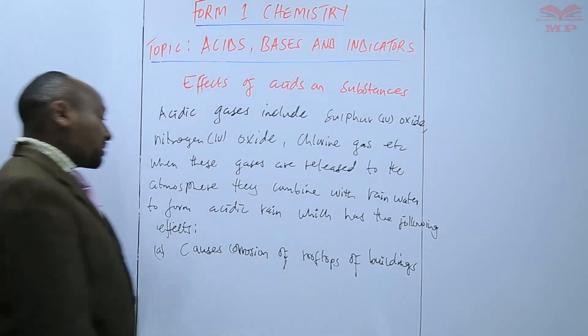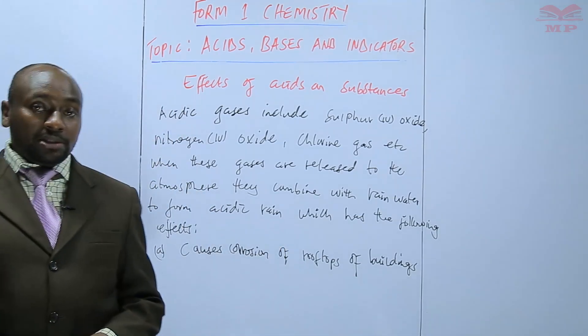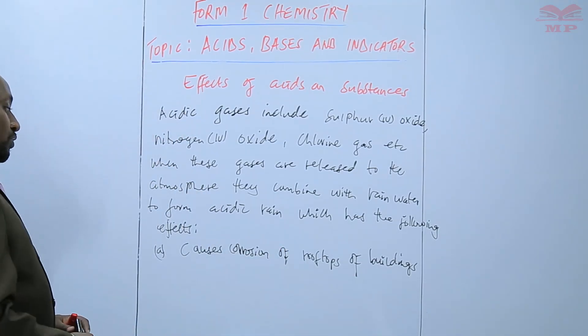The buildings start getting corroded, especially the roofs, those that are made of iron sheets. So that can be as a result of the acidic rain.